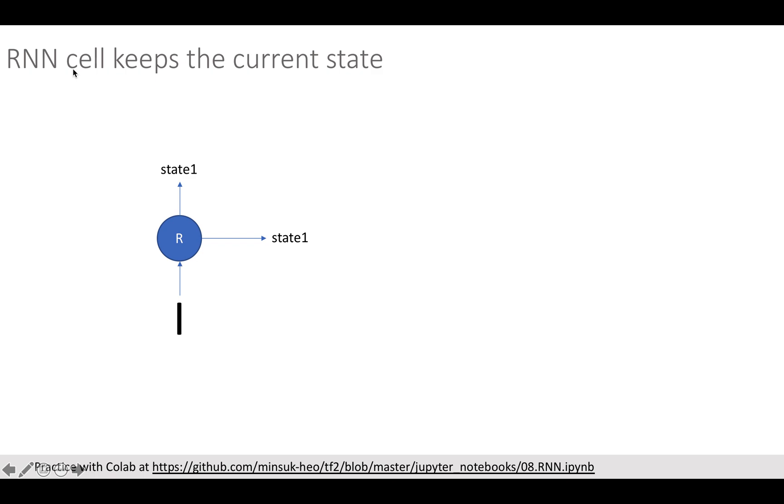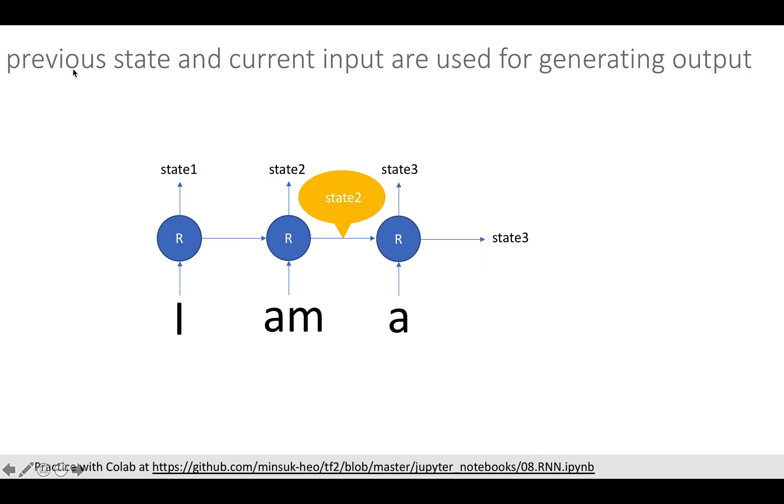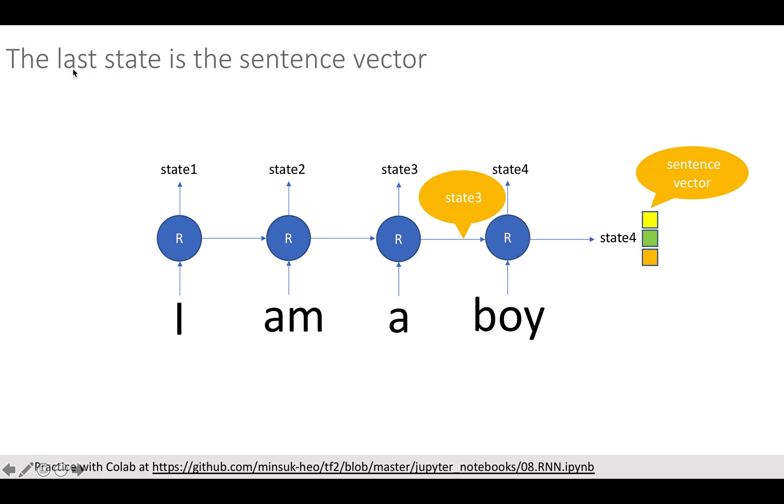Let's see how the RNN keeps input sequence. First word 'I' comes into RNN cell and RNN cell returns output. Then the second word 'am' is coming. Here you can see the current RNN cell utilizes previous output with current input to return its output. The same thing happens to the next RNN cell. Eventually the last output can represent the whole sentence as a numeric value.